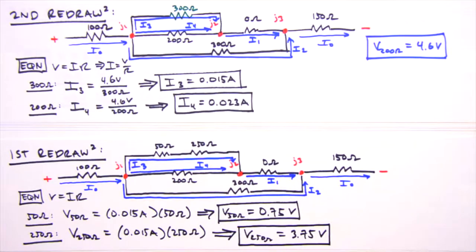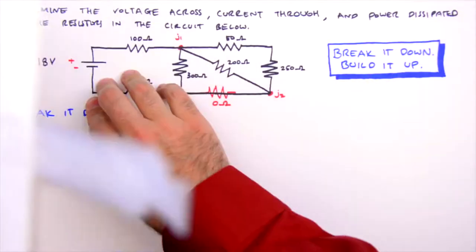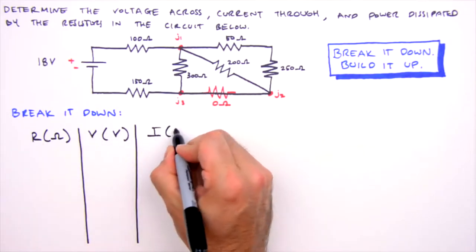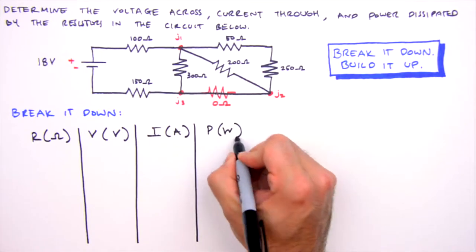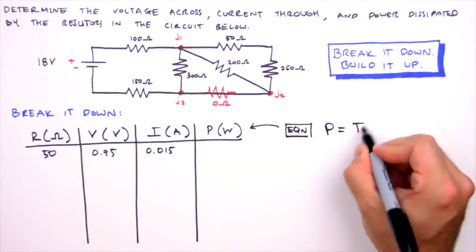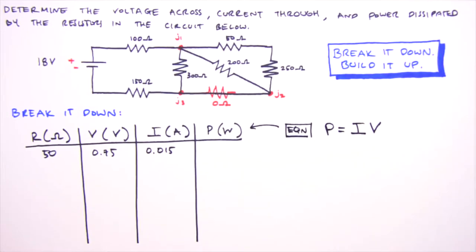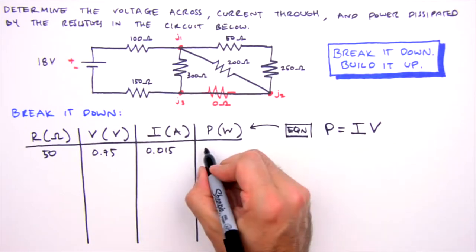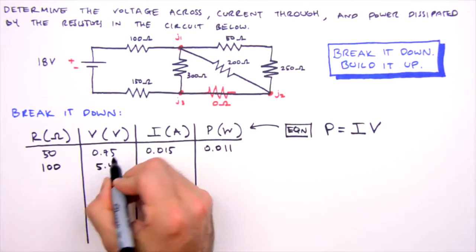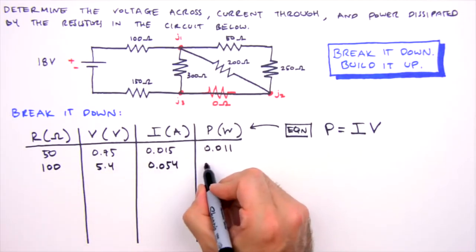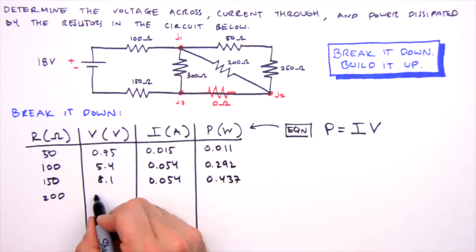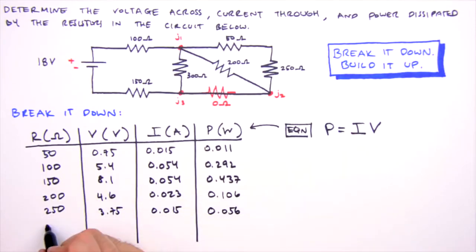And with values for all of the currents and voltages, we're done building it back up. Now we'll generate a solutions table and calculate power dissipation for each resistor. With voltage and current in adjacent columns, power is a cinch to calculate. Recall that power dissipation for a resistor is equal to the product of the current and voltage. So we just multiply 0.75 volts and 0.015 amps, and we get 11 milliwatts for the 50 ohm resistor. For the 100 ohm resistor, we multiply 5.4 volts and 0.054 amps, and we get 0.292 watts. We'll fill in the table for the other resistors, collecting solutions from our re-redraws, and determining power dissipation as we go.